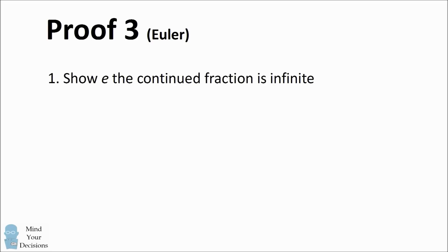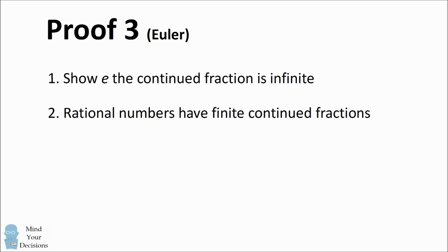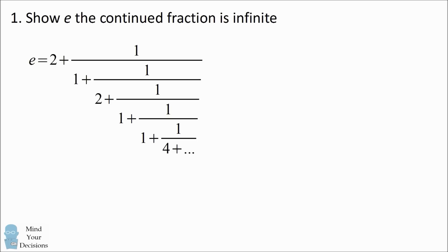There's a third proof from Euler. The steps are to show that E has a continued fraction representation that's infinite. The second observation is that rational numbers always have a finite continued fraction representation, and that will imply that E has to be irrational. E has the continued fraction representation: 2 plus 1 over the quantity 1 plus 1 over the quantity 2 plus 1 over the quantity 1 plus 1 over the quantity 1 plus 1 over the quantity 4, and so on.